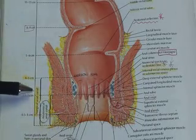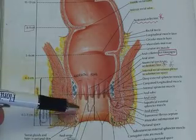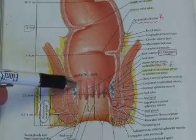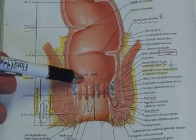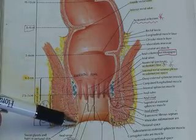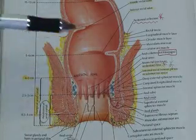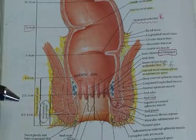Now the surgical anal canal is defined as that region from the anal verge extending to the superior aspect of the columns of Morgagni, at the level of what's called the anal rectal ring. And this is usually a 4 to 5 centimeter region from anal verge to the anal rectal ring, or the surgical, also called functional, anal canal.